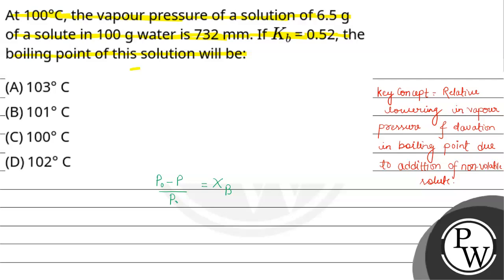First, we will calculate number of moles of water. Number of moles of water will be 100 divided by molecular weight of water which is 18. That will equal 5.55 because number of moles equals weight given divided by molecular weight.